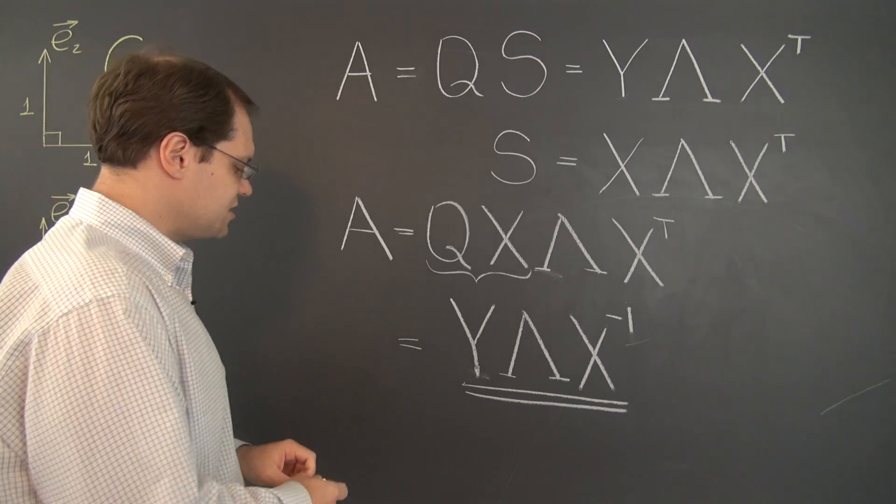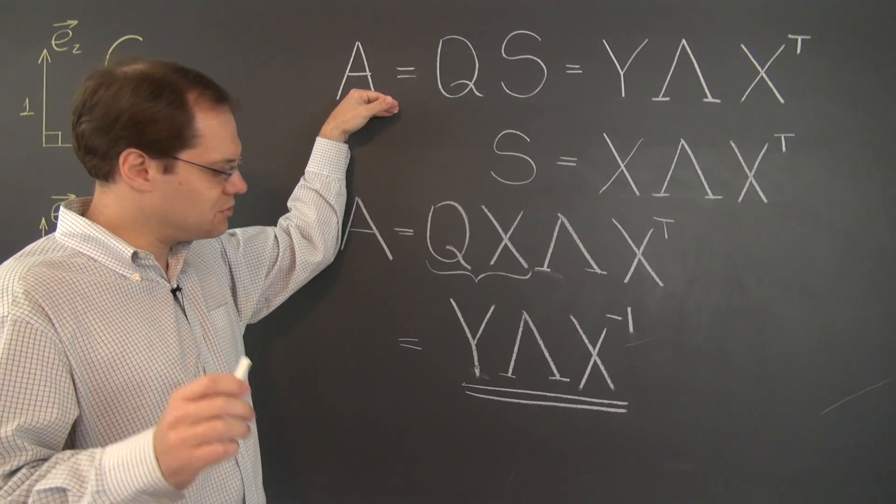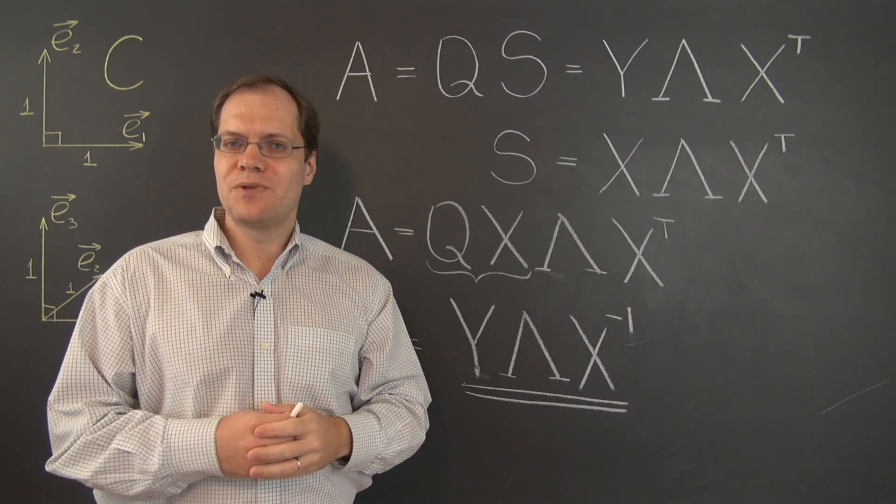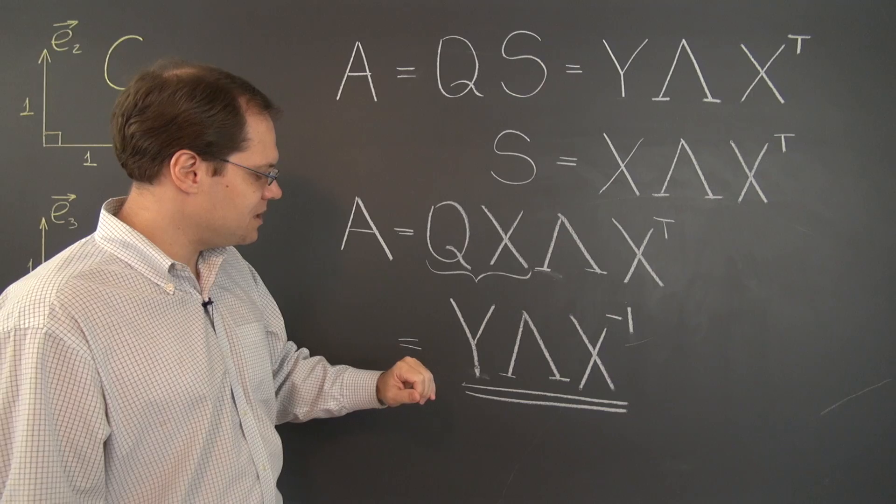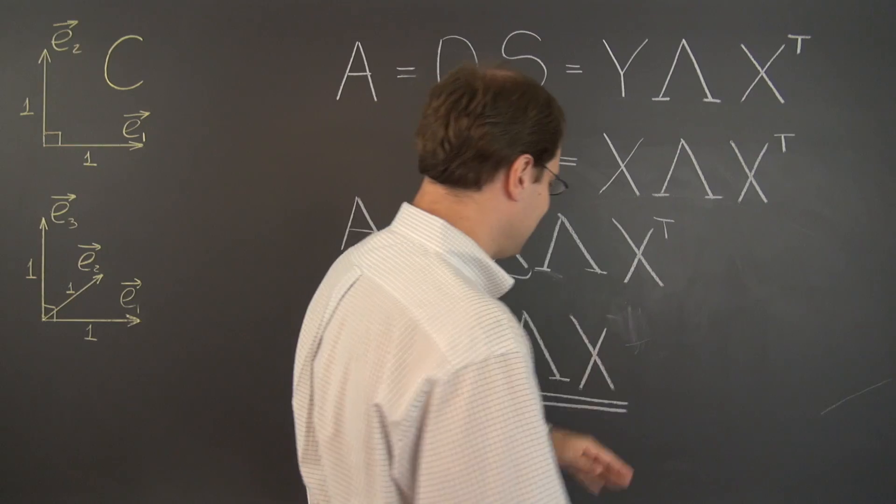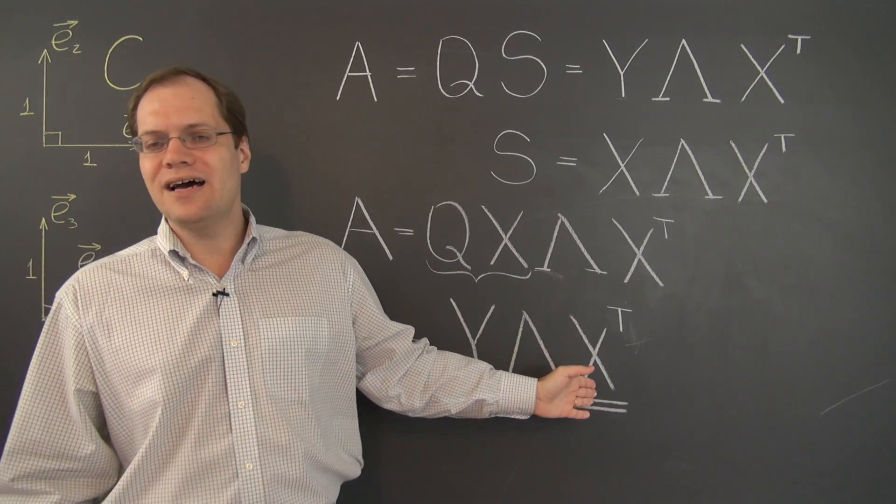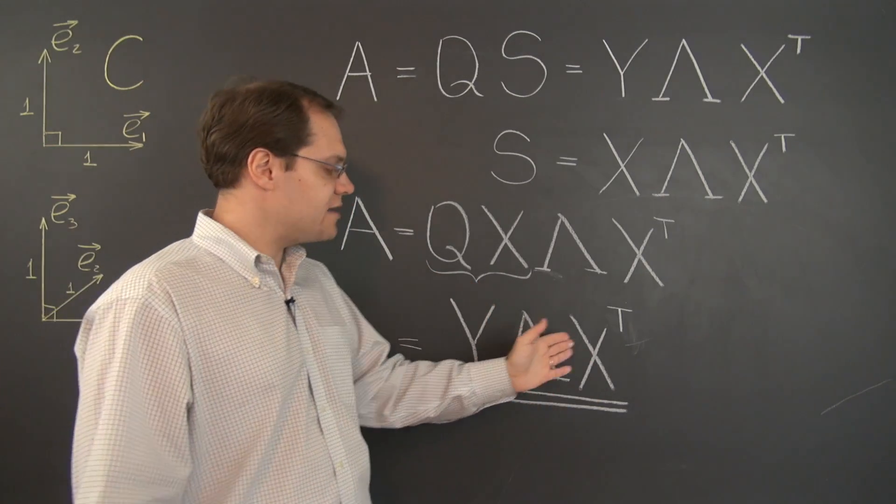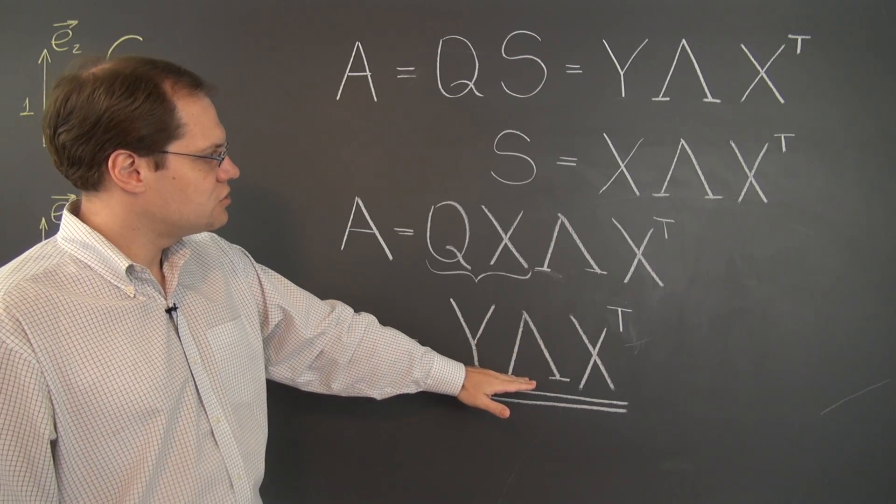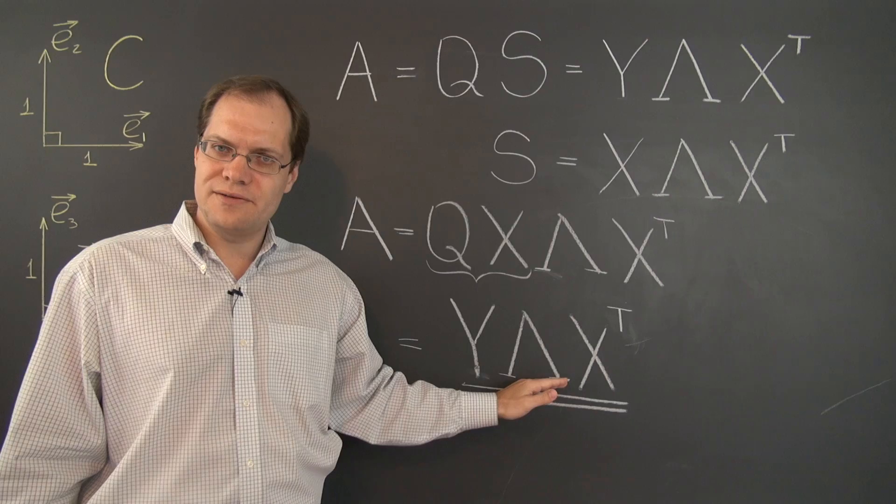In words, according to the singular value decomposition, any matrix whatsoever, right now we're focusing on square matrices but it'll work for rectangular matrices as well. But for now, for any square matrix can be decomposed as a product of an orthogonal matrix times a diagonal matrix times, and I don't have to write the inverse here, I can write transpose because it's an orthogonal matrix, times another orthogonal matrix or the transpose of another orthogonal matrix. So even though it looks similar to the eigenvalue decomposition, this is for a symmetric matrix, this works for an arbitrary matrix.